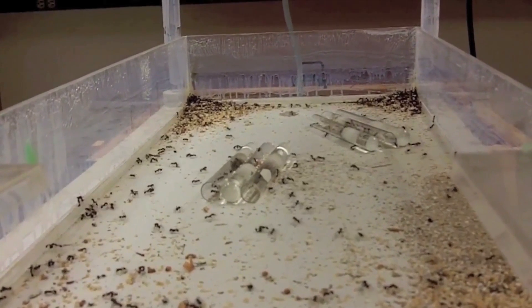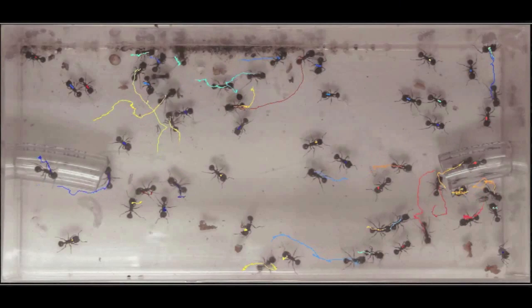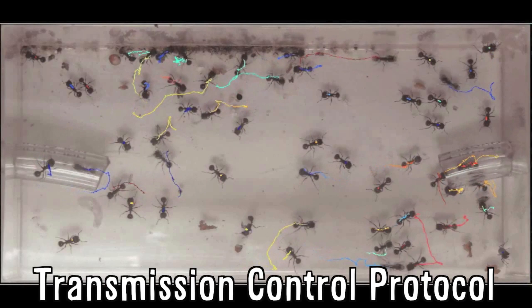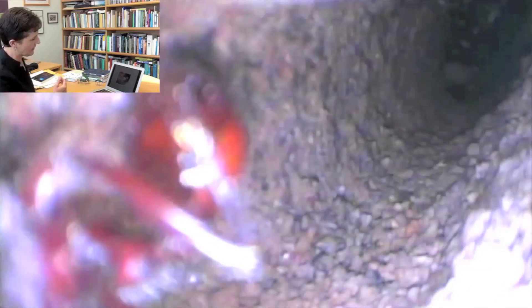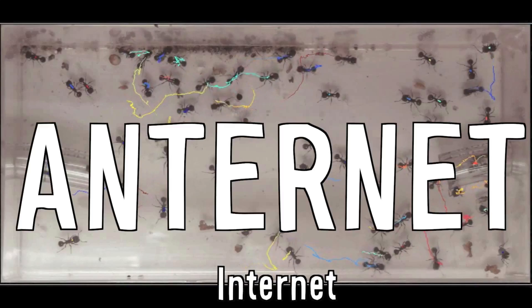It turns out ants are like the internet. The way they communicate with their colony is quite similar to the transmission control protocol used to keep data traveling the internet from bogging down. Basically food for ants is like bandwidth. The more food there is the more ants that leave and return to the colony. The less food the less movement and the ants adjust their movement based on this flow of traffic. Like the internet. Anternet.